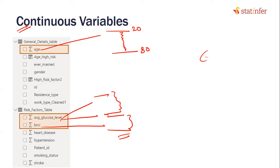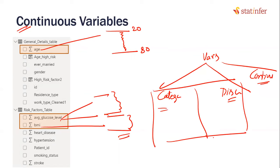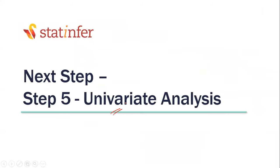Once you have done this segregation of all variables into categorical/discrete and continuous, you perform a different analysis for each group. For categorical and discrete variables there is one set of analysis; for continuous variables there is a different set. This one-by-one variable analysis is known as univariate analysis. You will find interesting results variable by variable and note those results. The next step in this project will be univariate analysis.